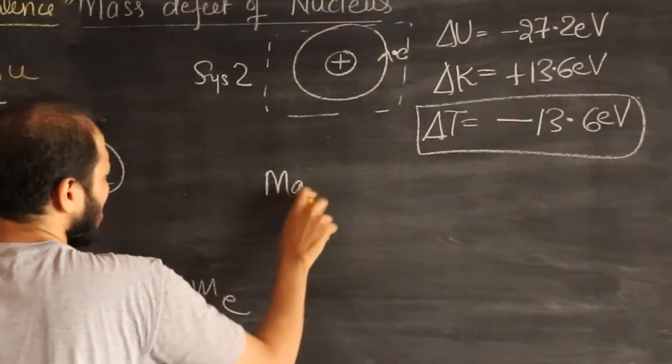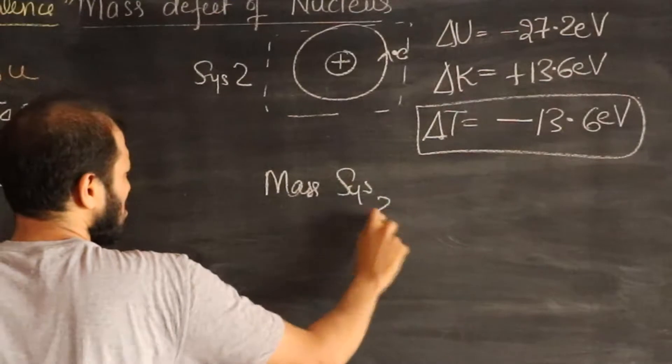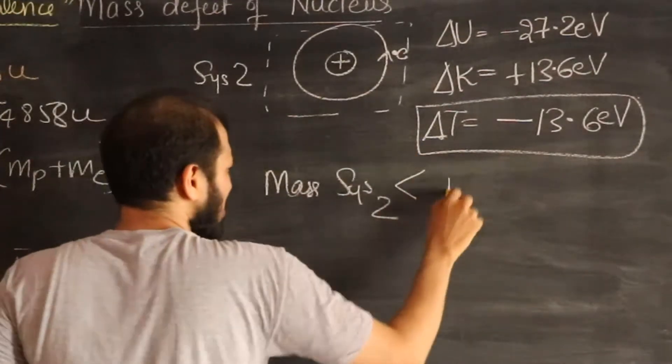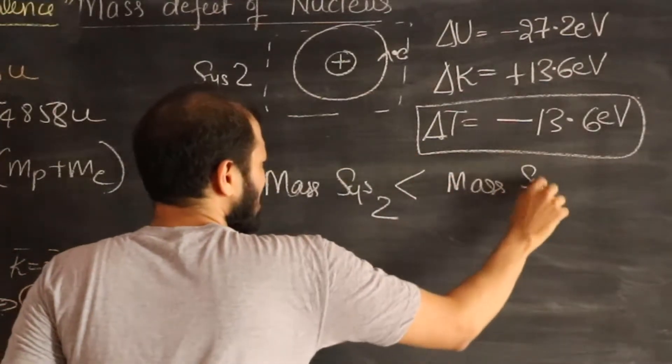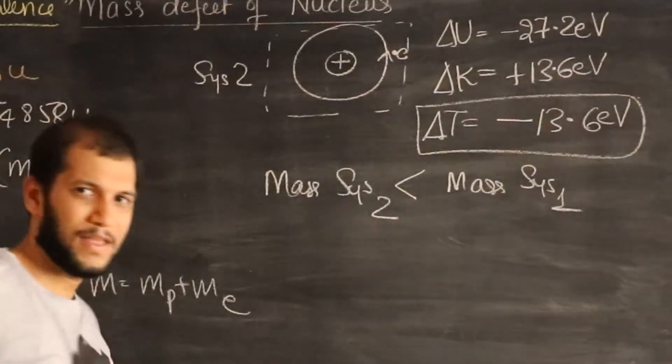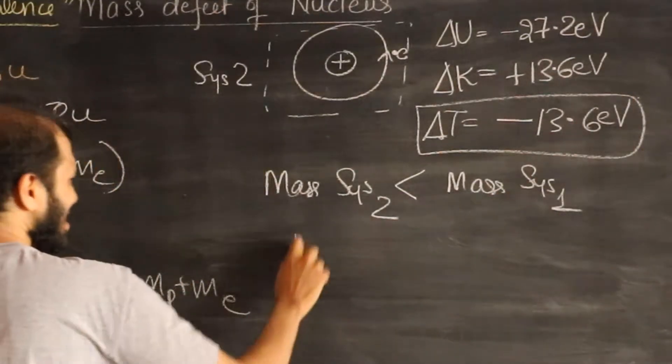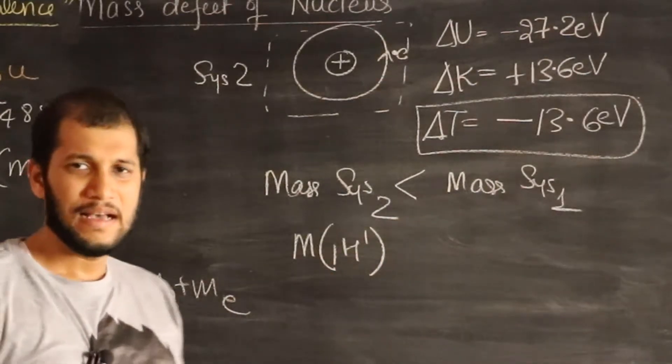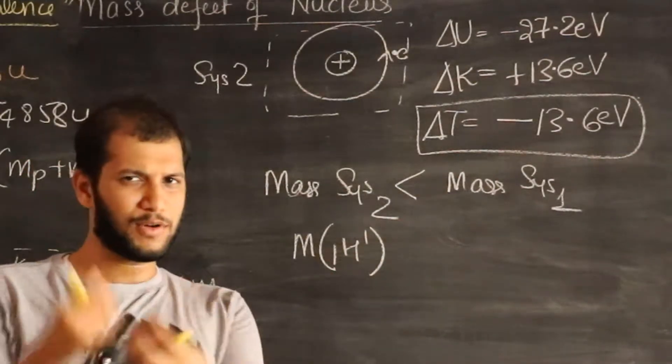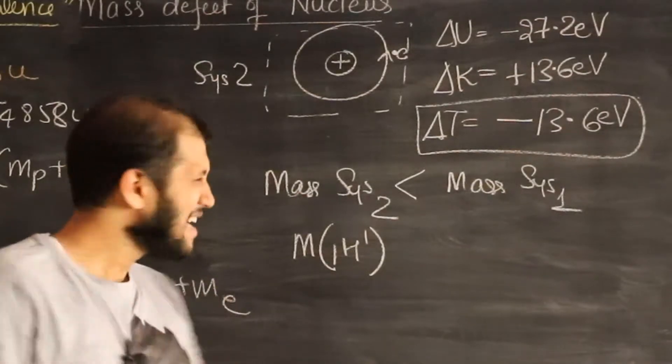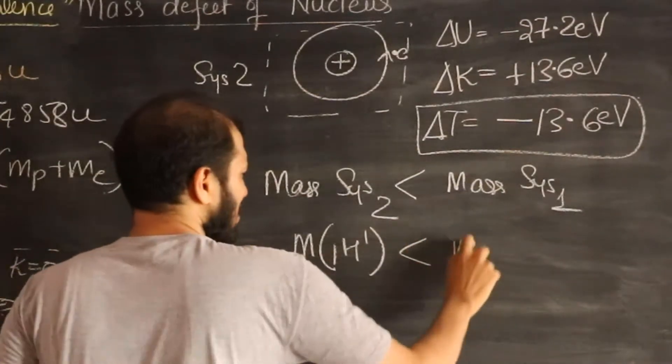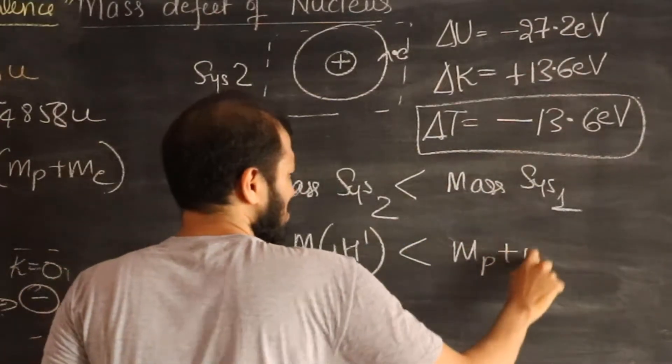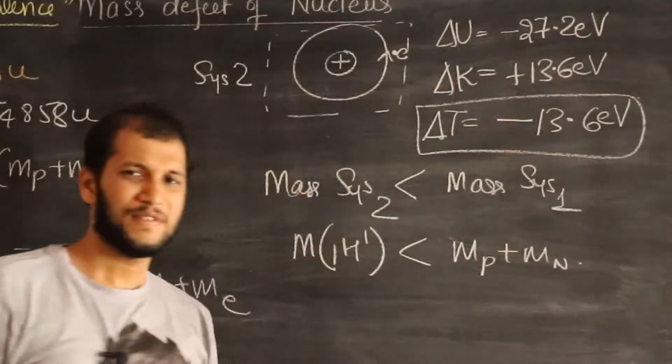then we will see that mass of system 2 is smaller than mass of system 1. In other words, we see that mass of 1H1, the hydrogen atom, not the nucleus, the atom, the proton and the electron together, is smaller than the mass of the proton plus mass of the electron. Smaller.